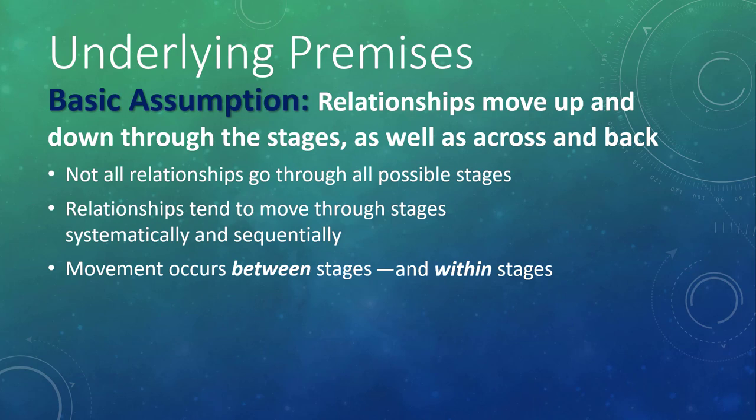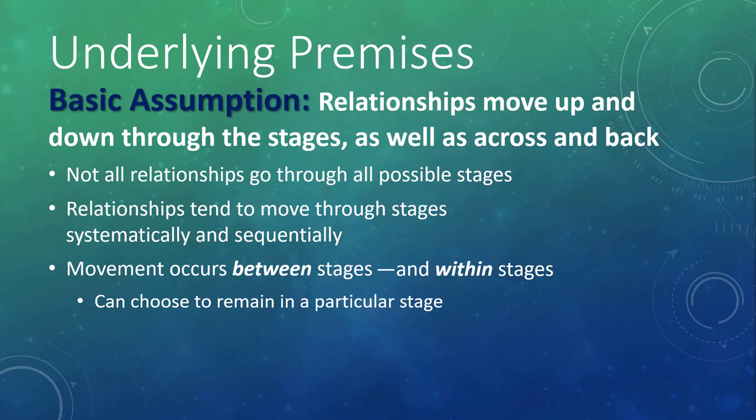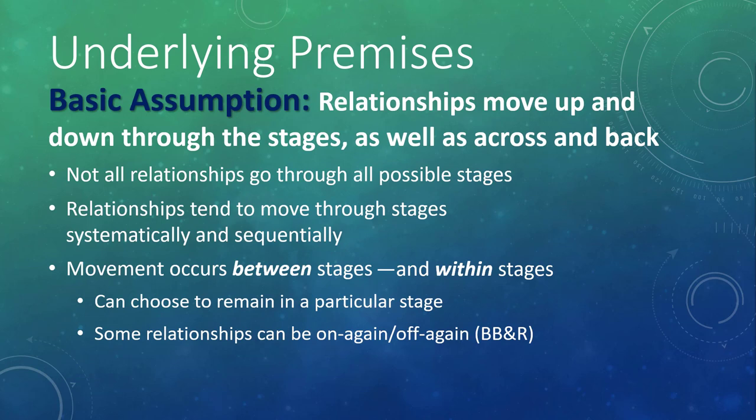You can choose to remain in a particular relationship stage for a while, not getting back on the escalator to go up or down. But even then, you are moving around in the stage—you may argue, moving over a bit toward the other escalator, and then make up, all while still remaining on that floor. Beebe, Beebe, and Redmond acknowledge that some relationships can be on-again, off-again. These are often extreme movements between stages, like the relationship ending suddenly due to one partner changing their mind or external factors like someone having to move across country. The next time they meet, they likely spend some time in the earlier stages, but depending on the relationship, could end up in the same stage they were in before the abrupt exit.